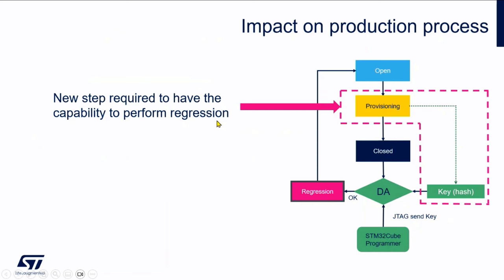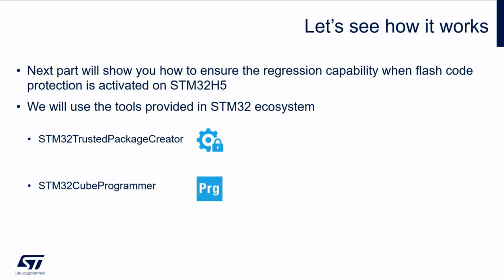The impact on the production process compared to, for example, an F4 is that you need this provisioning state. You switch from open to provisioning in the product state, then send a specific file to the device to provision the key hash. This is the main point of this demo — to show you that there is something changing and impacting your production process.